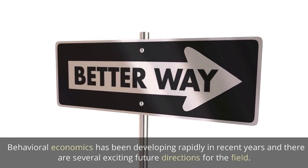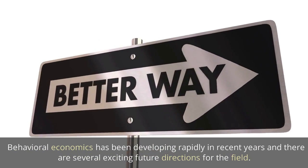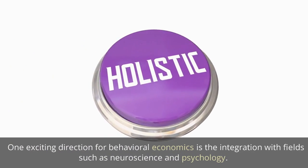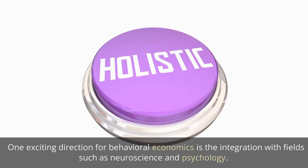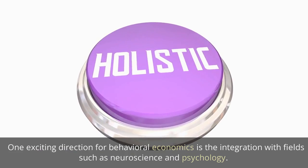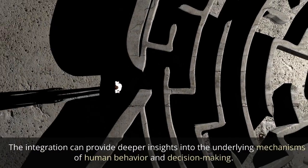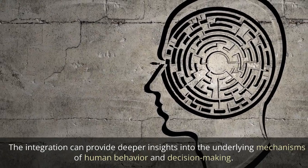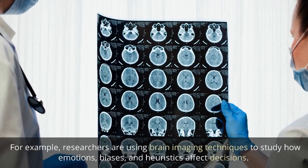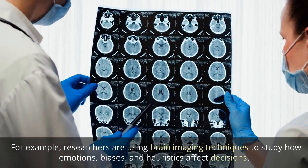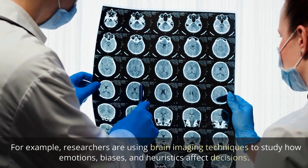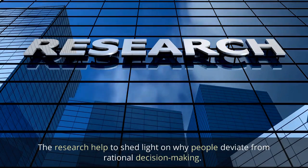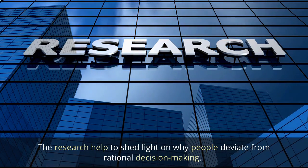Behavioral Economics has been developing rapidly in recent years, and there are several exciting future directions for the field. One exciting direction is the integration with fields such as neuroscience and psychology, which can provide deeper insights into the underlying mechanisms of human behavior and decision-making. For example, researchers are using brain imaging techniques to study how emotions, biases, and heuristics affect decisions, helping to shed light on why people deviate from rational decision-making.